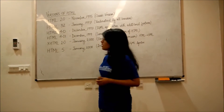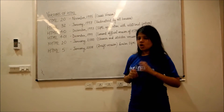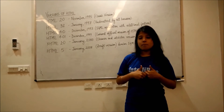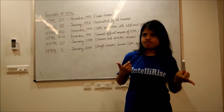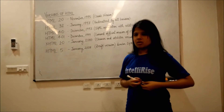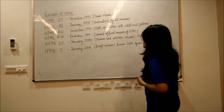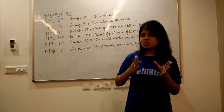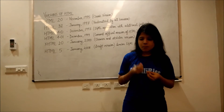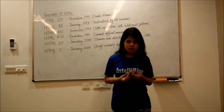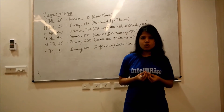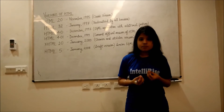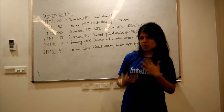Then we had HTML 4.0. It was one of the best versions of HTML because it had some additional features. It supported tables, it supported forms, and it supported CSS styling, which we will be studying in coming topics.